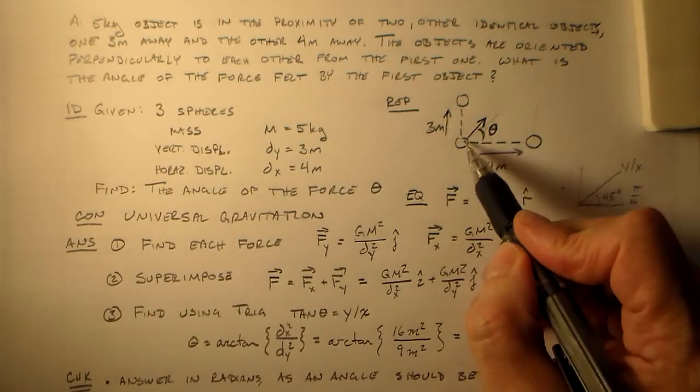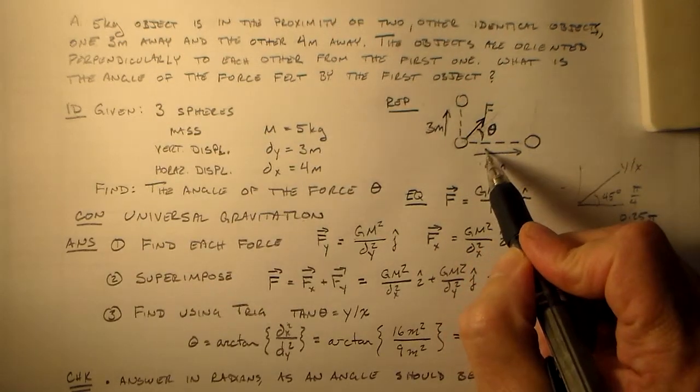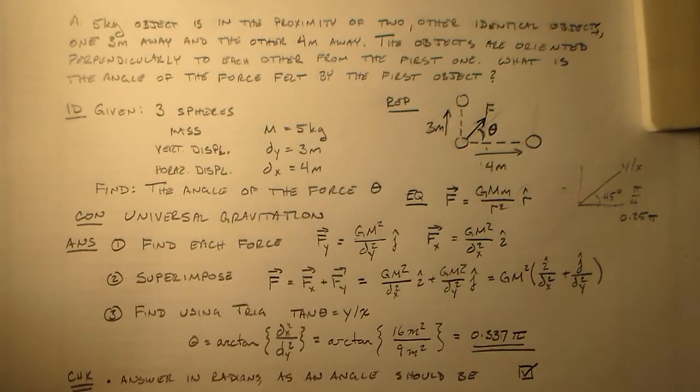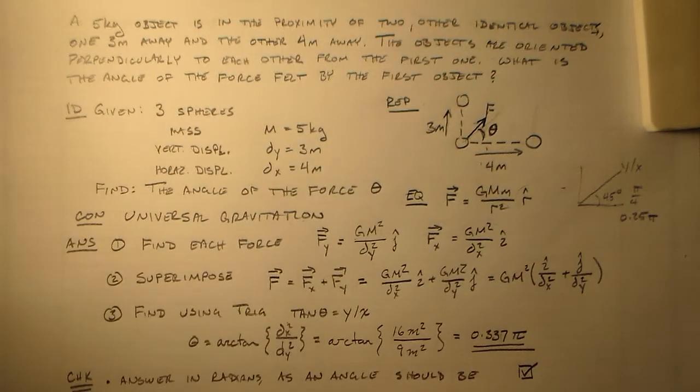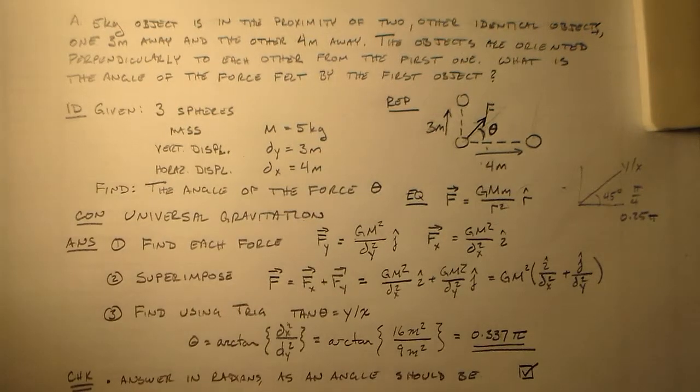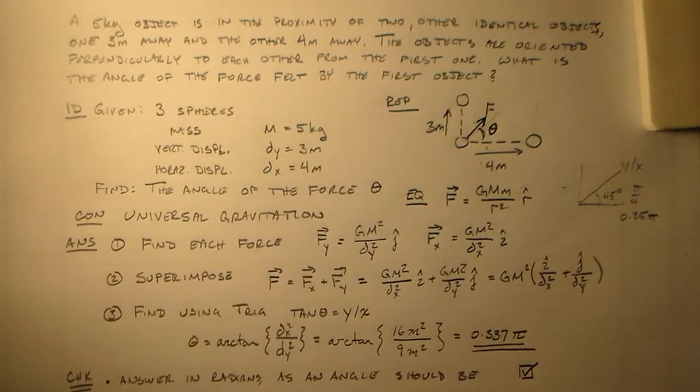We want this force, this resultant force, to be closer to this line than to this line. Which means it should be greater than 0.25. So theta should be greater than 0.25 pi, to be closer to the Y axis than the X. And it turns out that 0.337 is greater than 0.25. So it's pointing in the right direction.